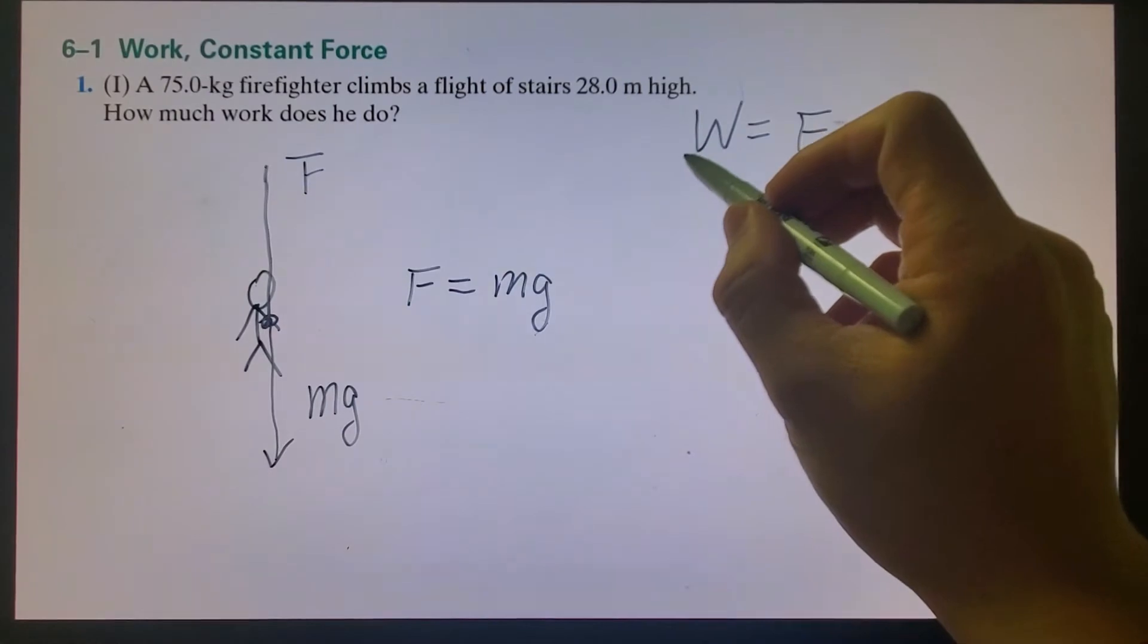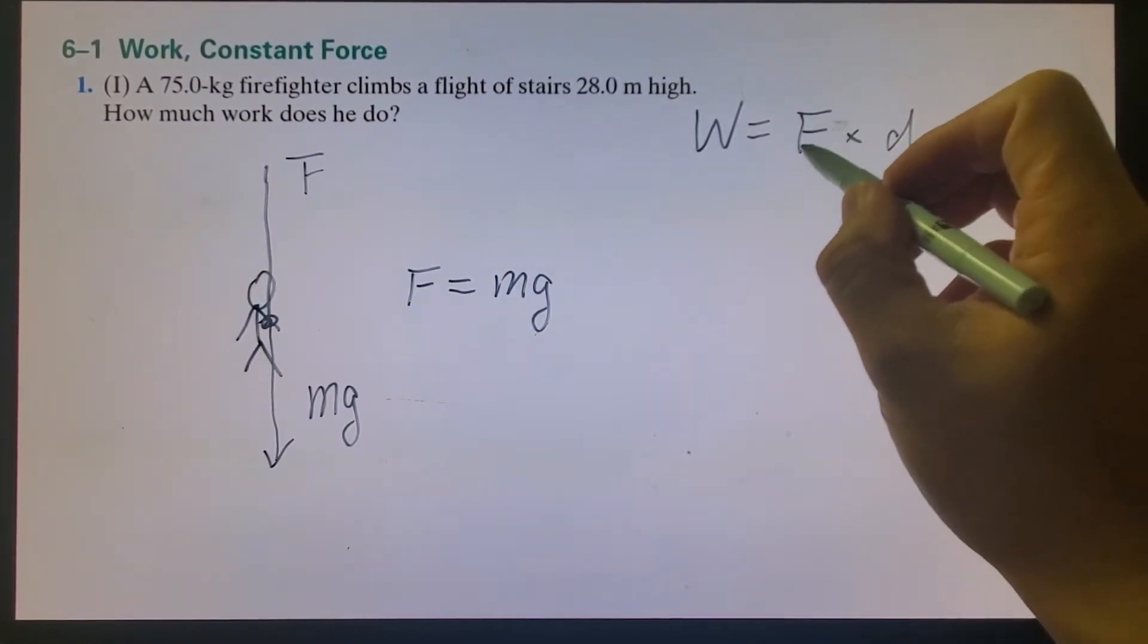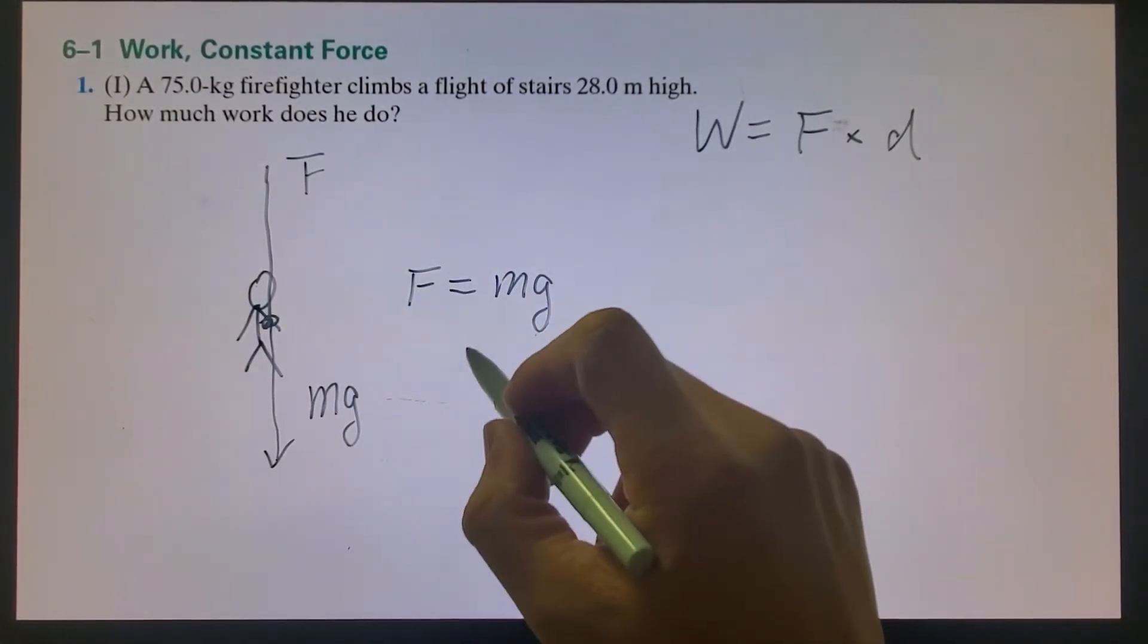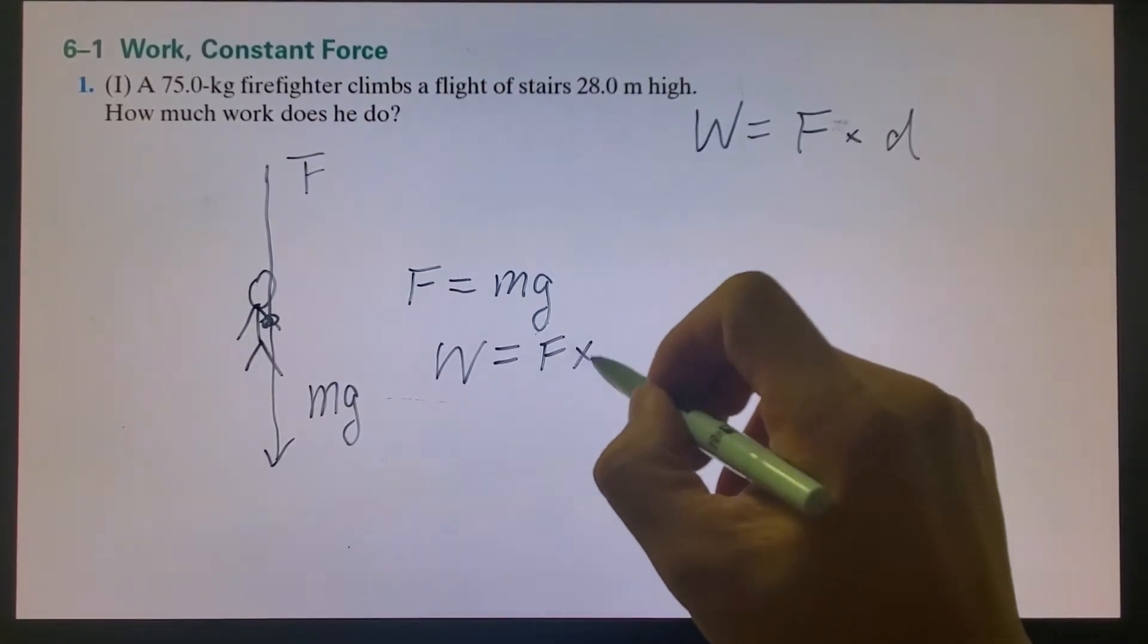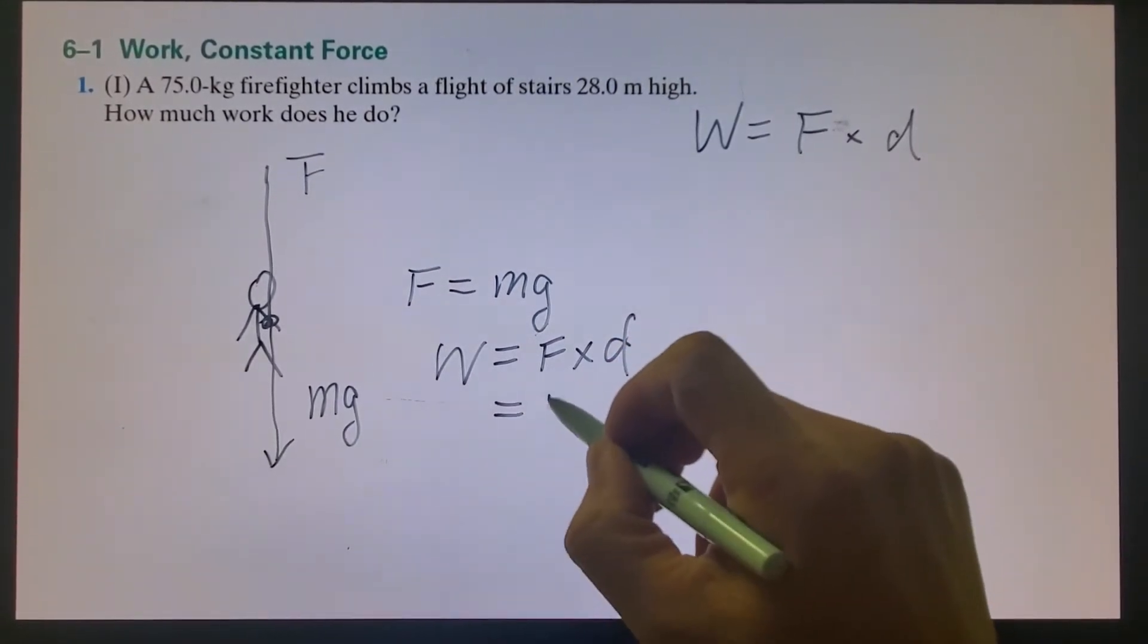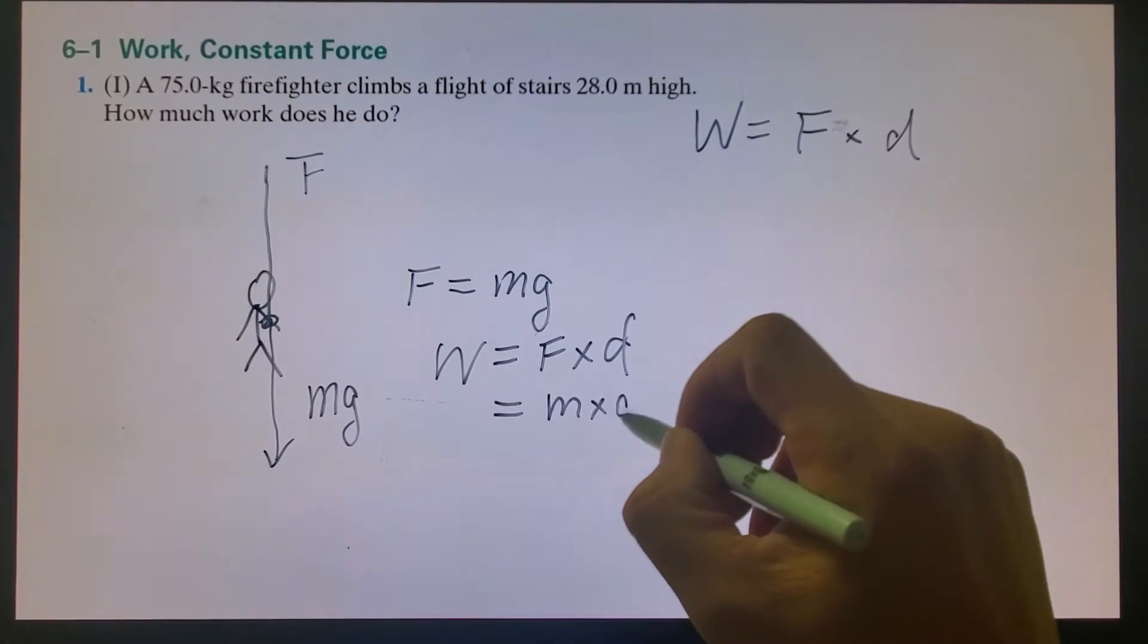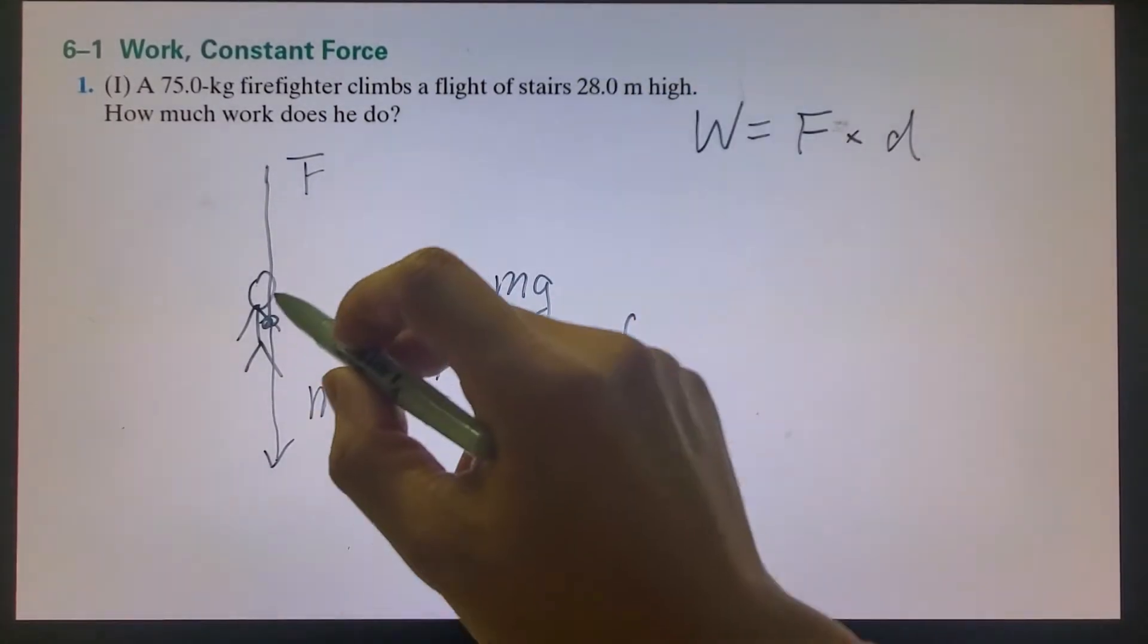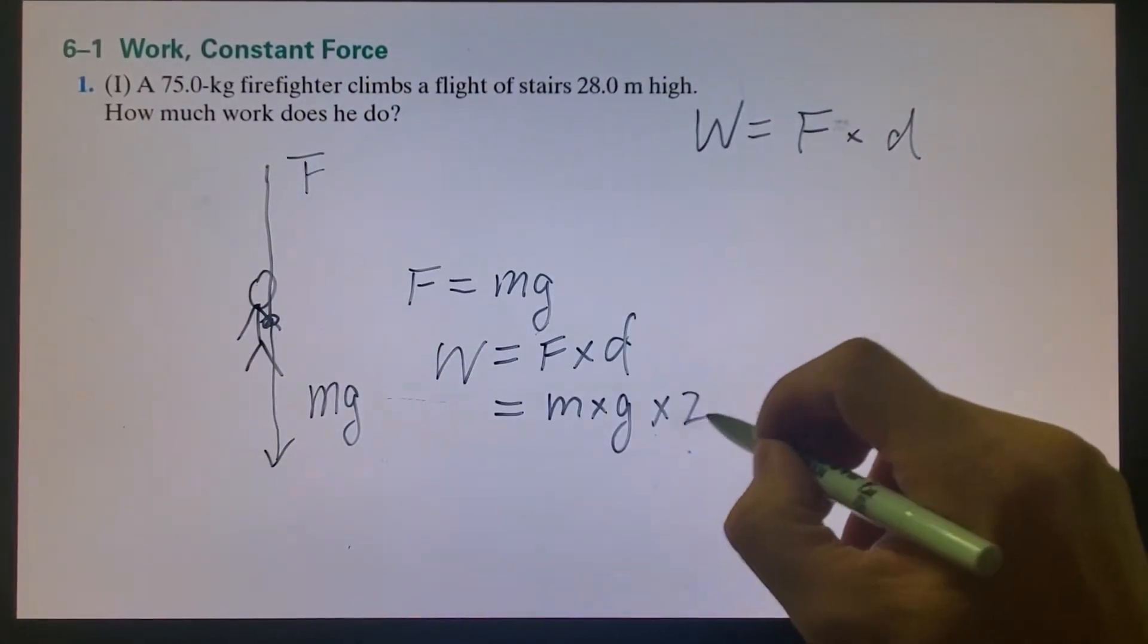All right, so work equals force times distance. That equals m times g times distance. It's moved 28 meters high.